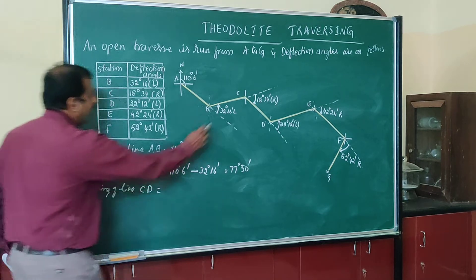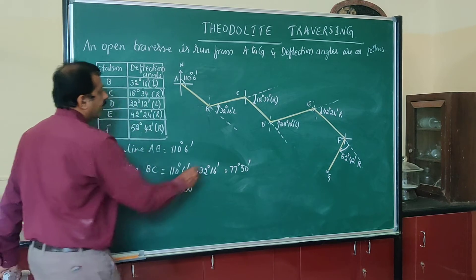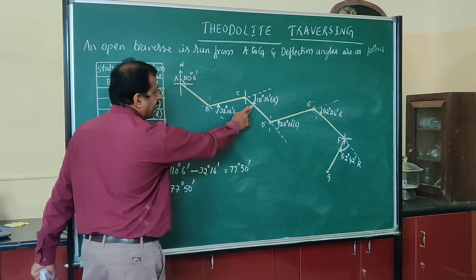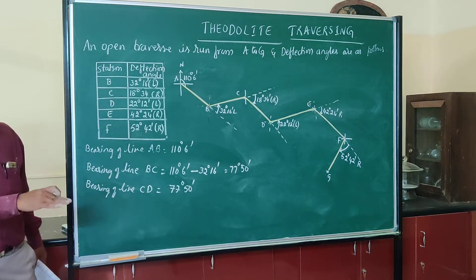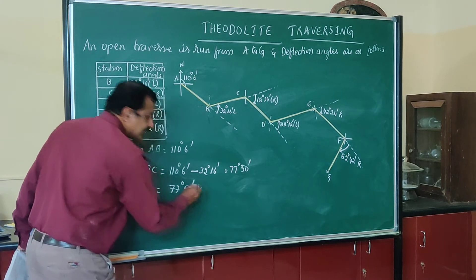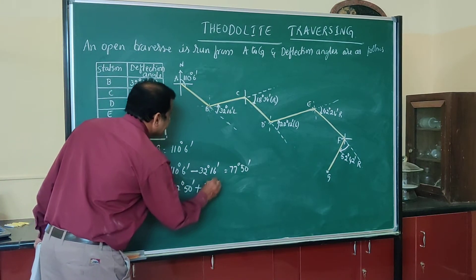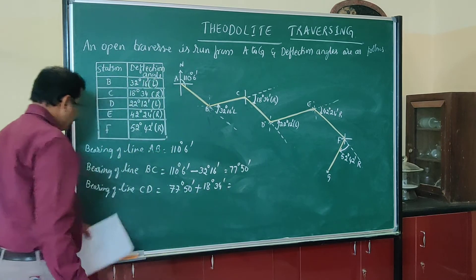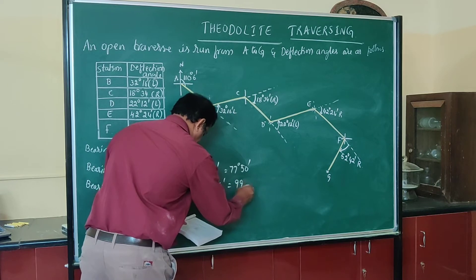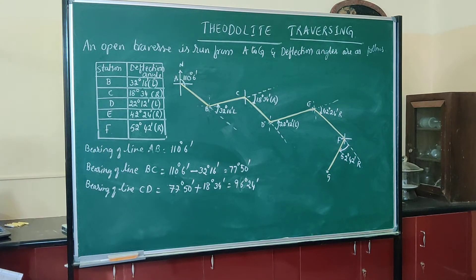Similarly, bearing of line CD equals 77 degrees 50 minutes. The deflection angle at C is to the right, so we add: 77 degrees 50 minutes plus 18 degrees 34 minutes. Therefore, the bearing of line CD is 96 degrees 24 minutes.